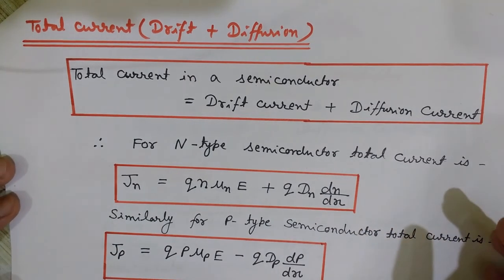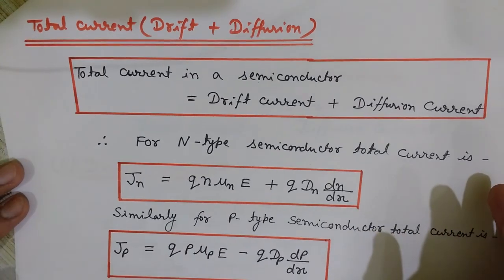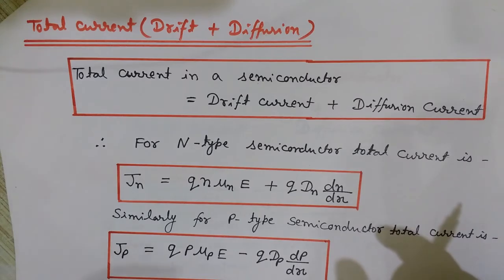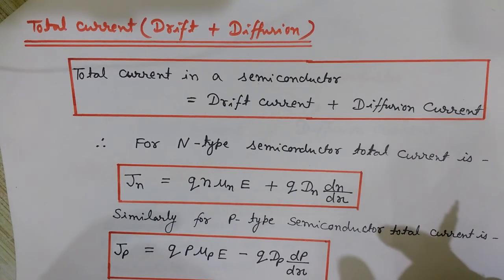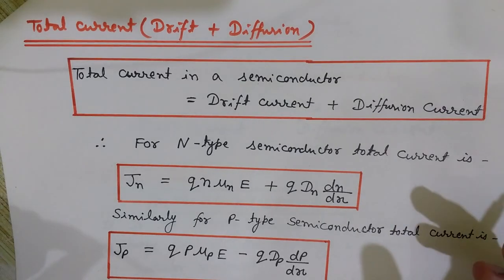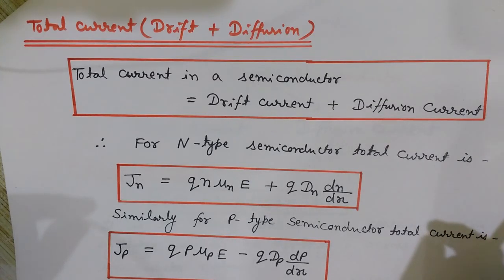We saw various concepts related to drift current and diffusion current — what they mean, how these currents flow in the semiconductor, and the related formulas we derived. I hope you liked the video. If you found it useful, please click the like button and subscribe to my channel, Engineering Made Easy, so you can find new videos easily. See you in the next video — thank you for watching, bye bye.